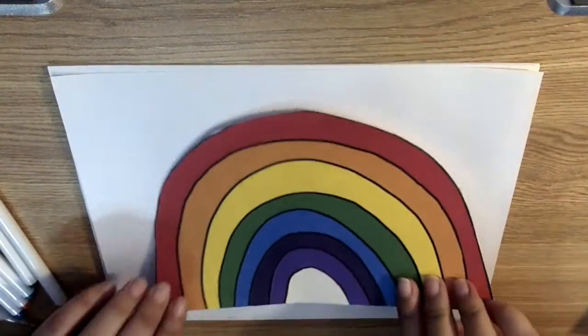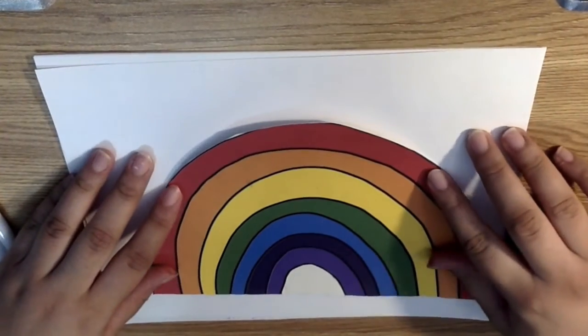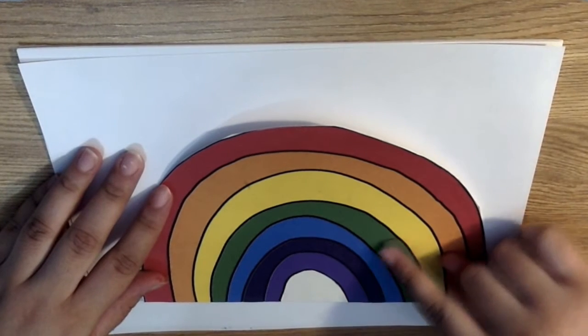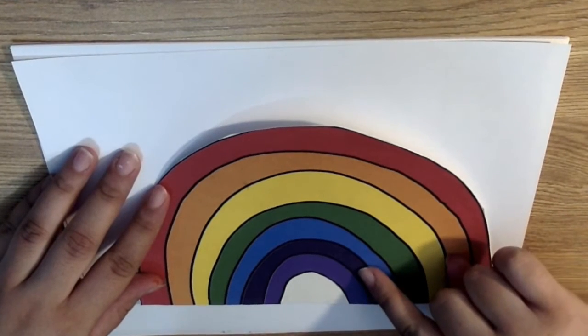If you don't remember your colors of the rainbow, here we have red, orange, yellow, green, blue, indigo, and violet.